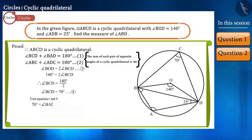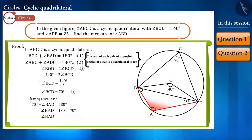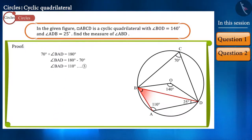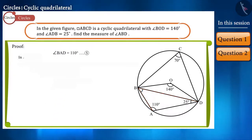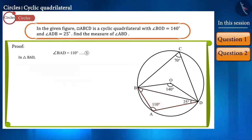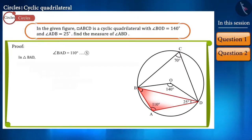We get the value of angle BAD as 110 degrees. According to the question we have to find the value of angle ABD. Look at triangle BAD — we are given angle ADB and we have found angle BAD. We know that the sum of the three angles of a triangle is 180 degrees.